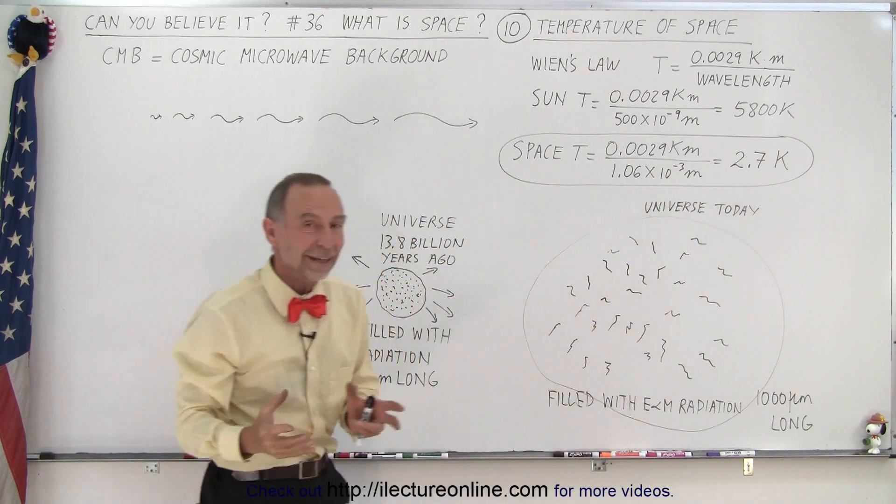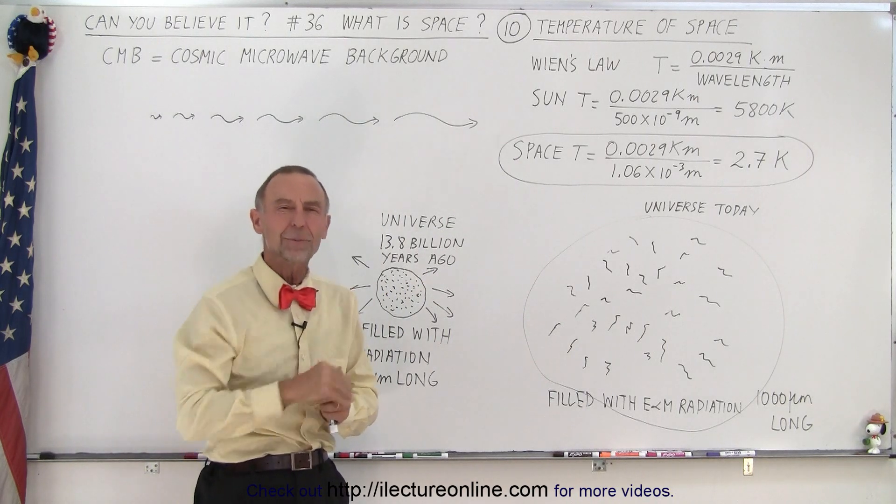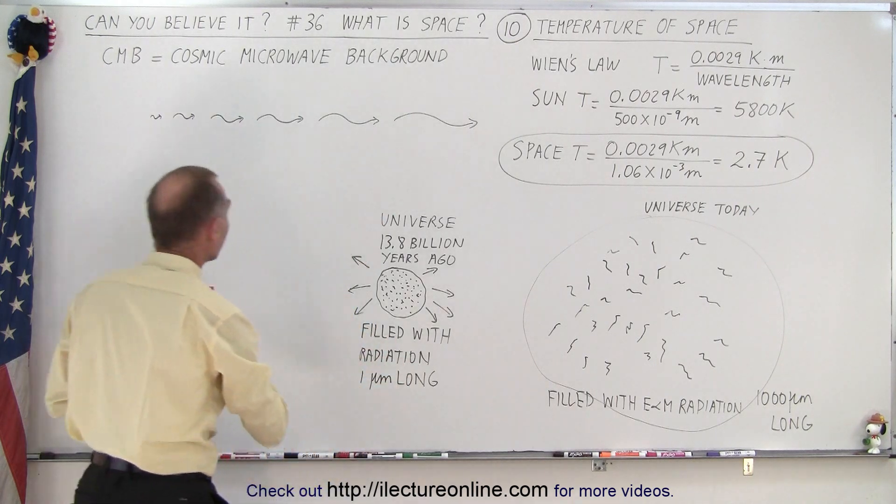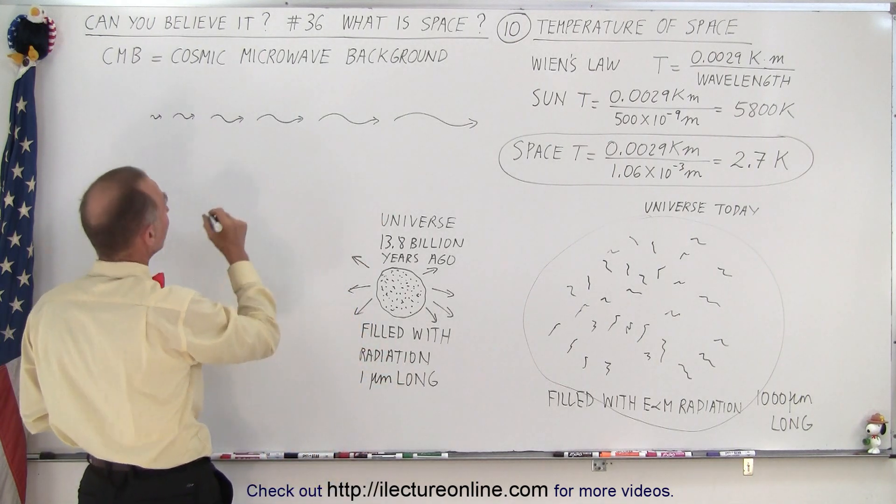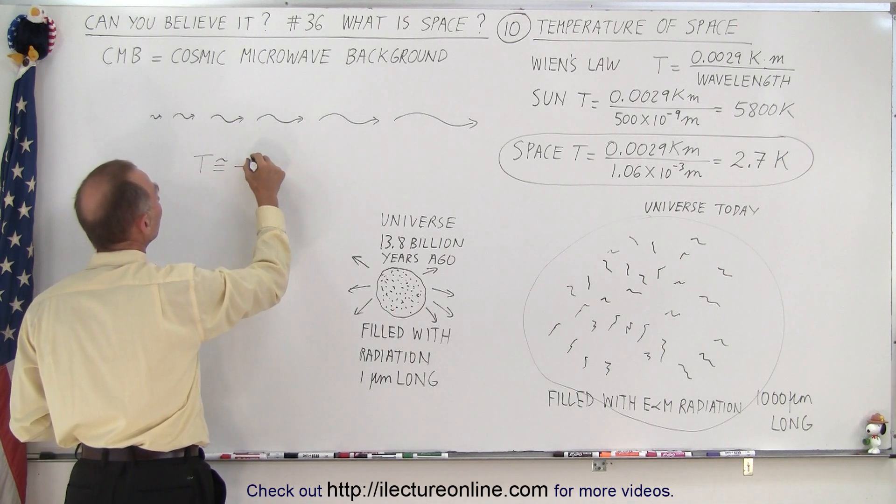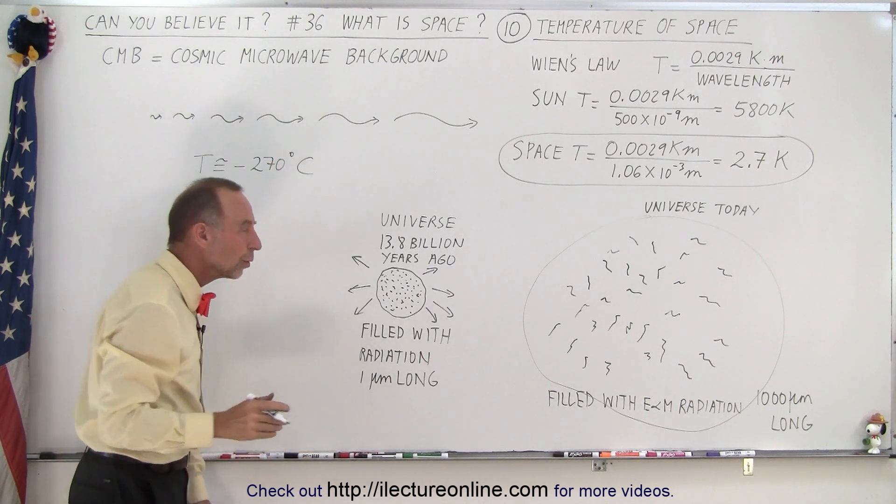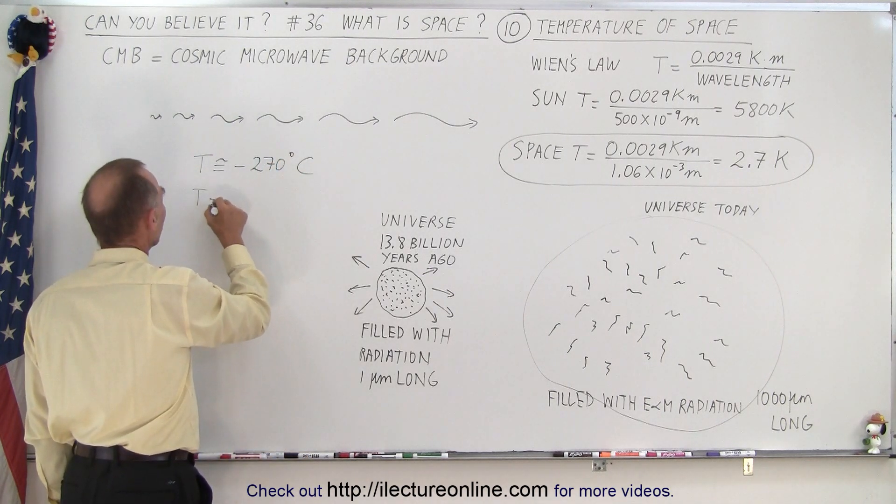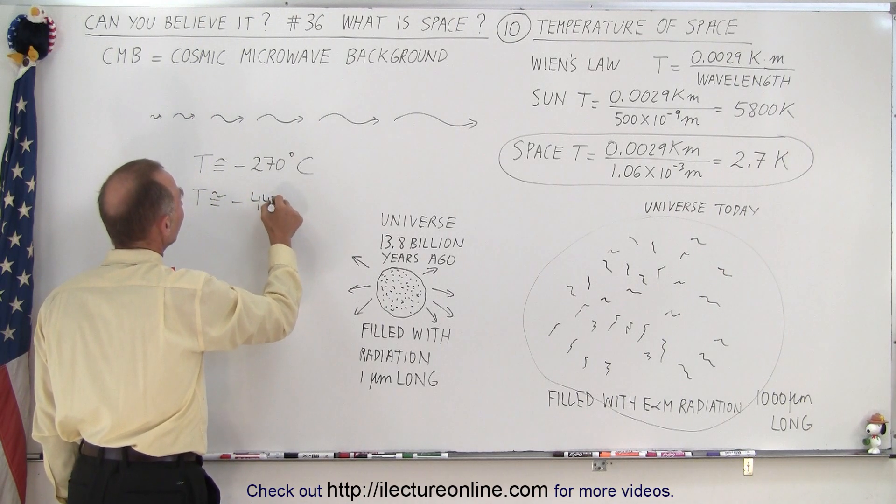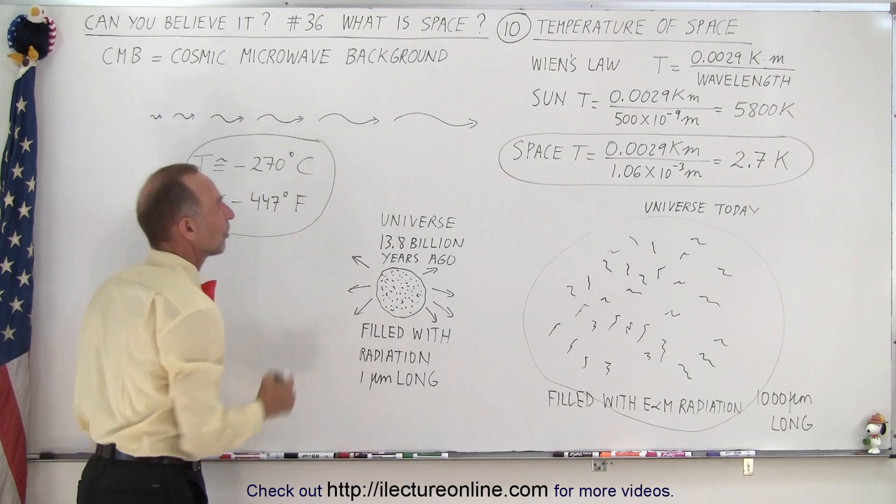we realize that the temperature of the universe is 2.7 Kelvin above absolute zero. Well, in Celsius degrees, you know that that would be about roughly minus 270 degrees Celsius, or about, roughly speaking, minus 447 degrees Fahrenheit.